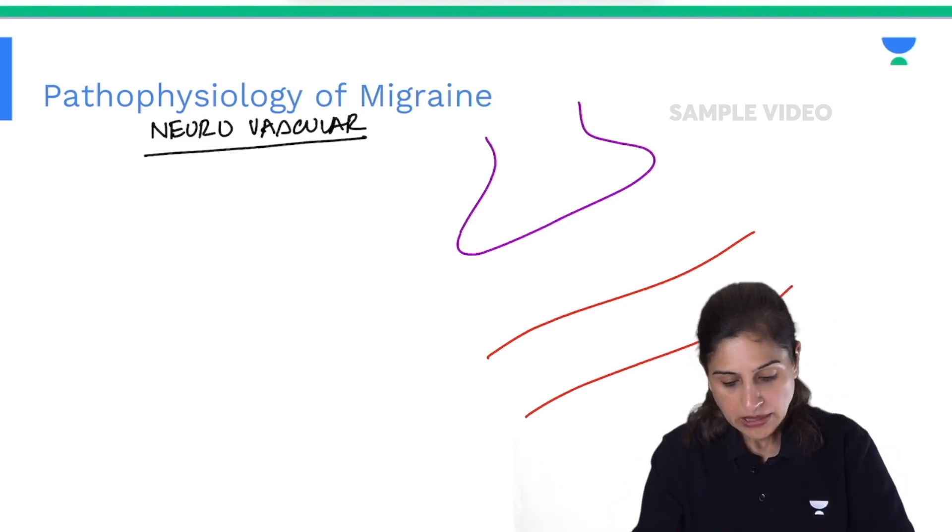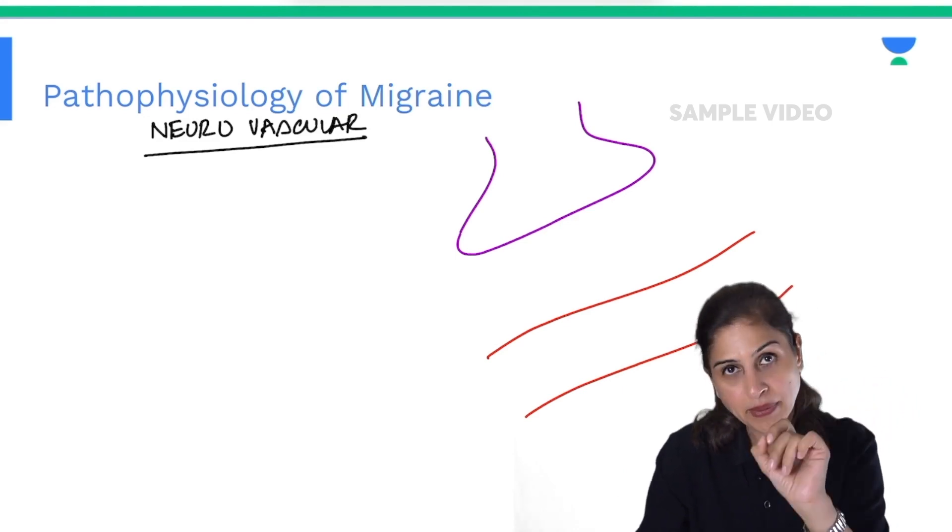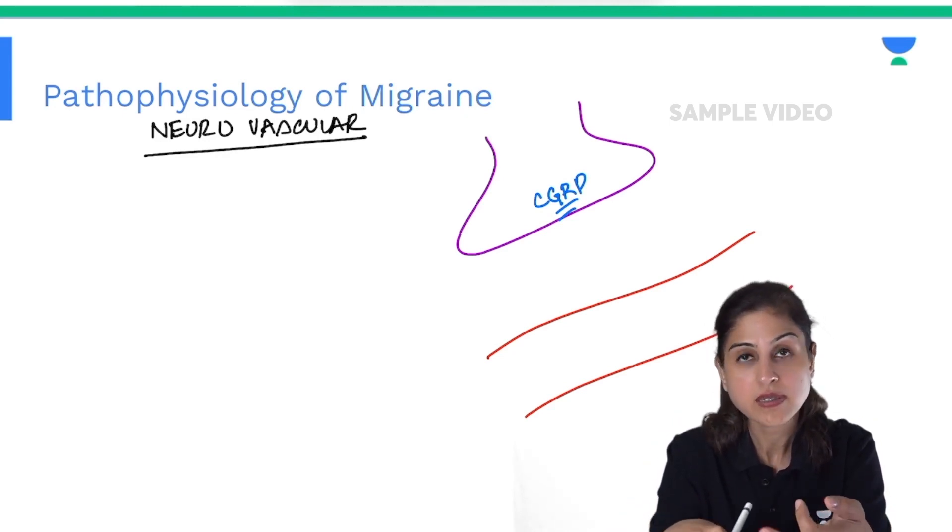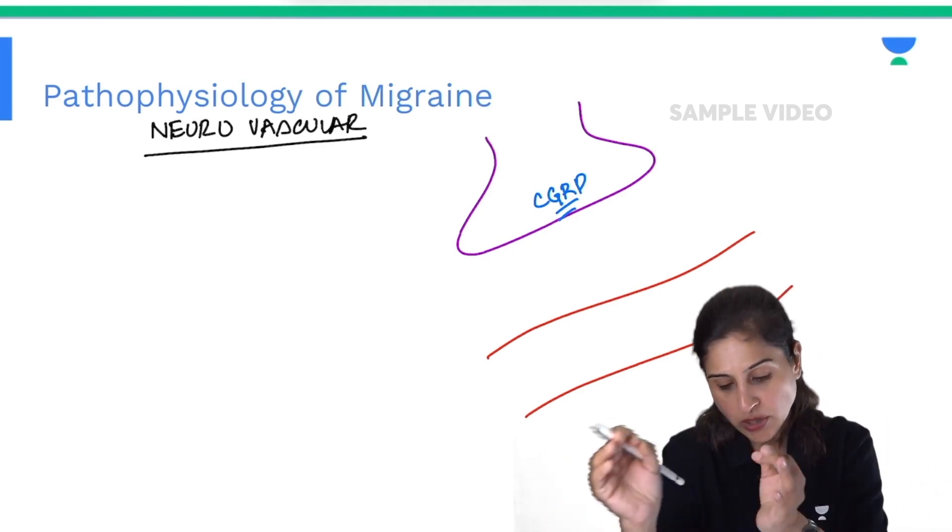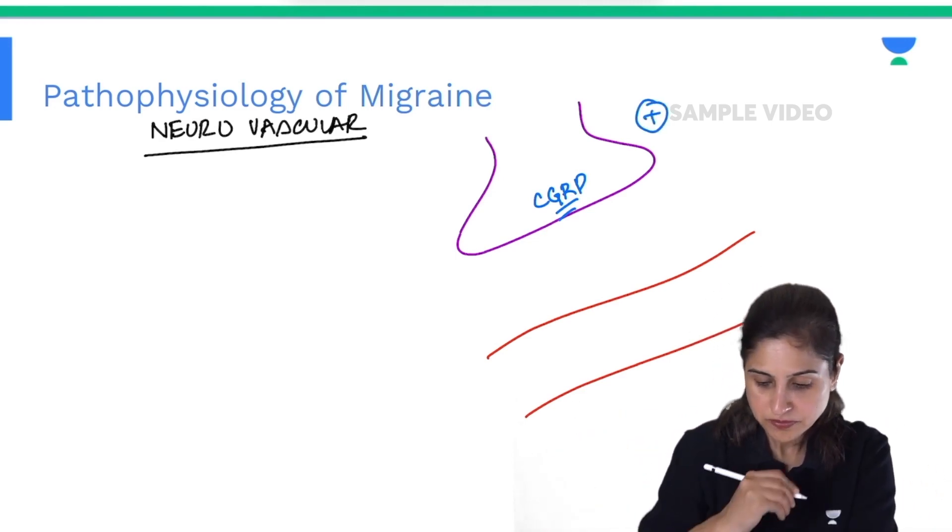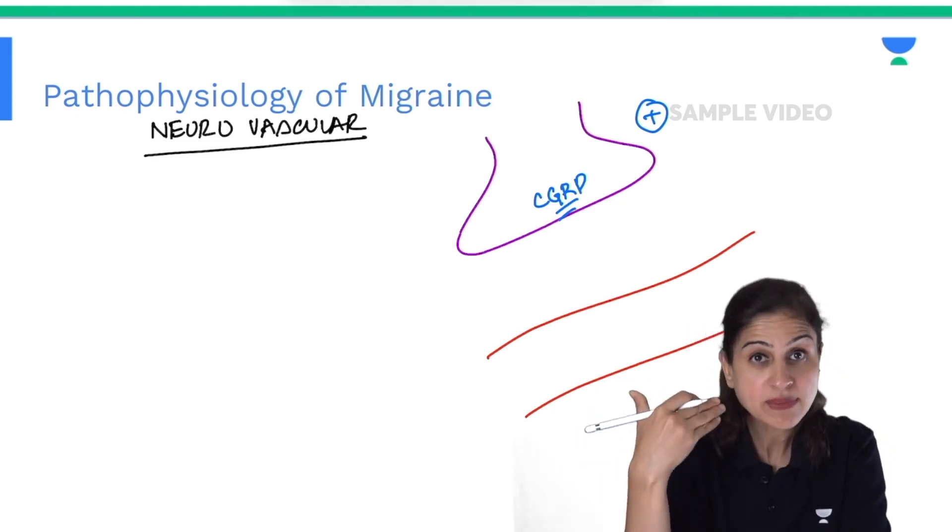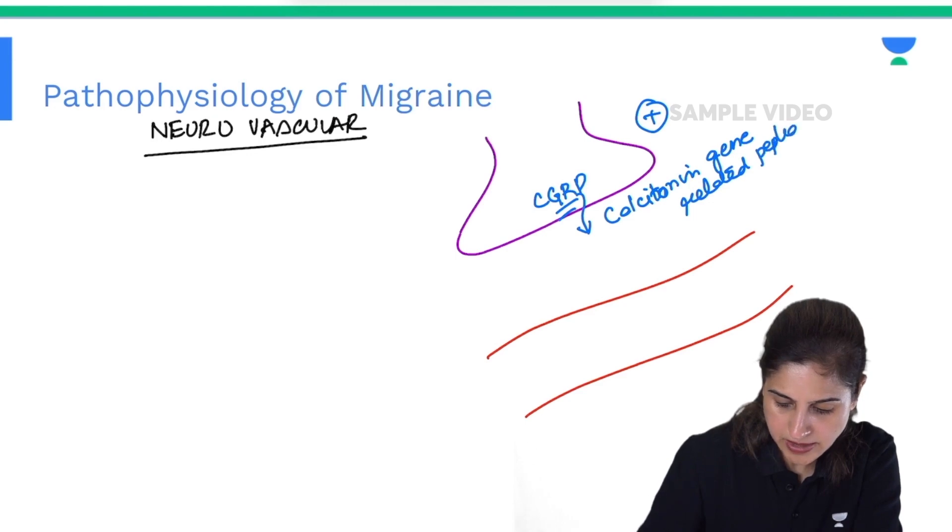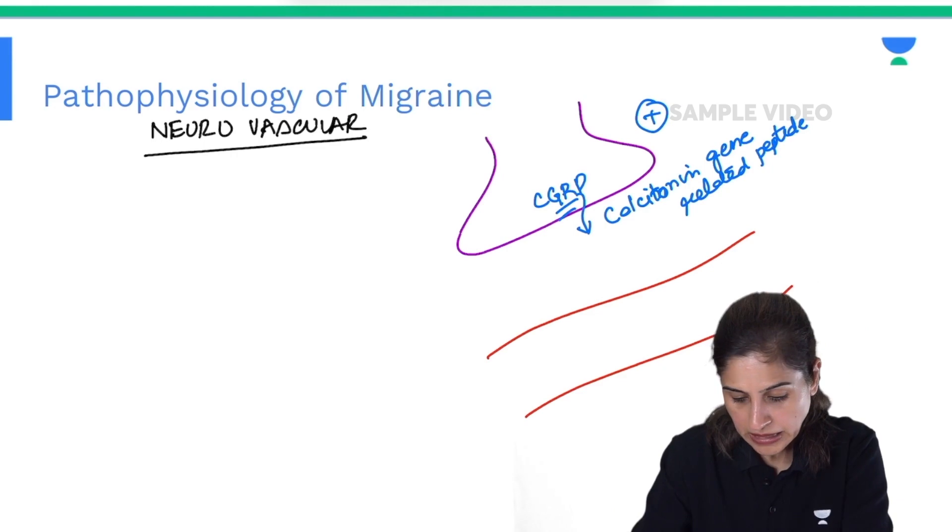From the neuron, the most important neuropeptide which is responsible is CGRP. There is a trigger, whether it is loud noise, loud sound, or insomnia, which stimulates the trigeminal nerve. When the trigeminal nerve gets stimulated, it causes the release of the most important mediator, CGRP or calcitonin gene-related peptide.